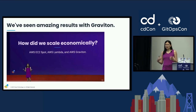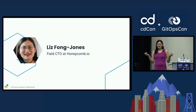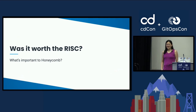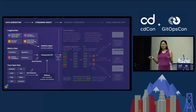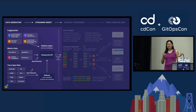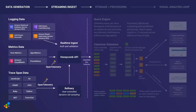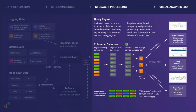Honeycomb has been an early adopter of this, and it has really enabled us to scale economically. I'm speaking in my capacity as field CTO at Honeycomb. Honeycomb's job is to transmute data collected using OpenTelemetry — a sister project under the Cloud Native Computing Foundation. Our customers send us millions of data points per second about what's going on in their systems, and our job is to ingest that data and make it queryable at runtime as quickly as possible so that users can debug what's happening inside their systems.